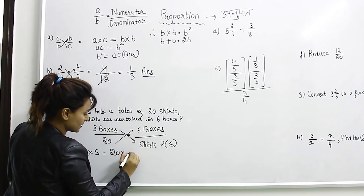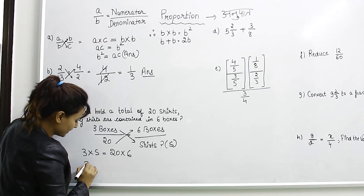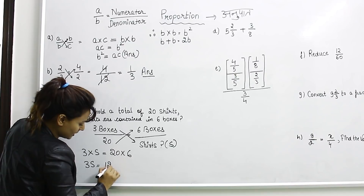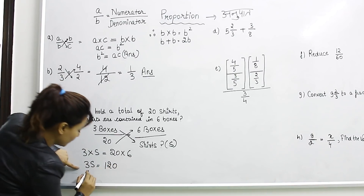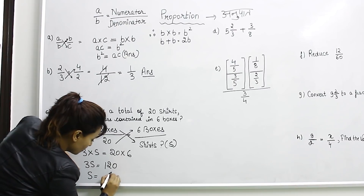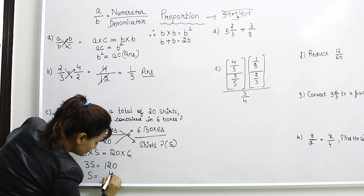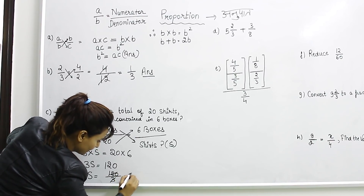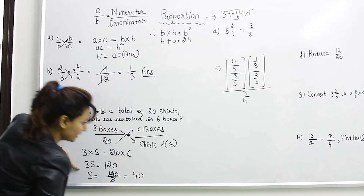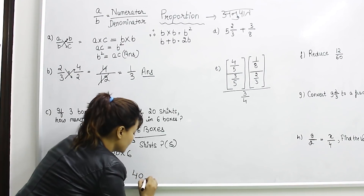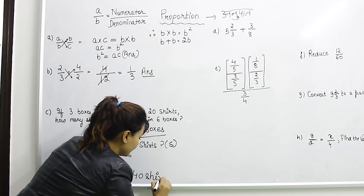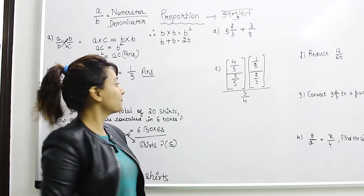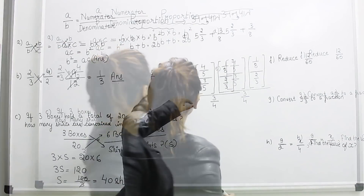Setting up the proportion: 3 is to 20 as 6 is to the unknown. Cross multiplying: 20 times 6 equals 120, then 120 divided by 3 equals 40. So the answer is 40 — 40 shorts are contained in 6 boxes.